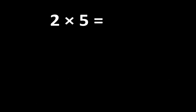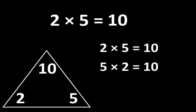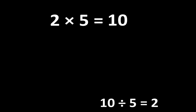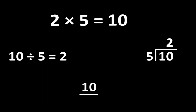2 times 5 is equal to 10. Let's examine some ways that 2, 5, and 10 are related to each other. If 2 times 5 is equal to 10, then 5 times 2 is also equal to 10. And since multiplication is related to division, we also know that 10 divided by 2 is equal to 5, and 10 divided by 5 is equal to 2. There are several different ways to write this idea, and that can be very useful.